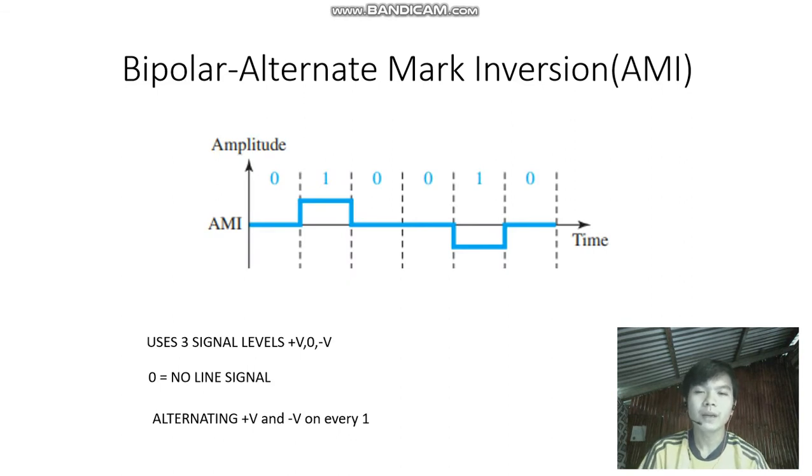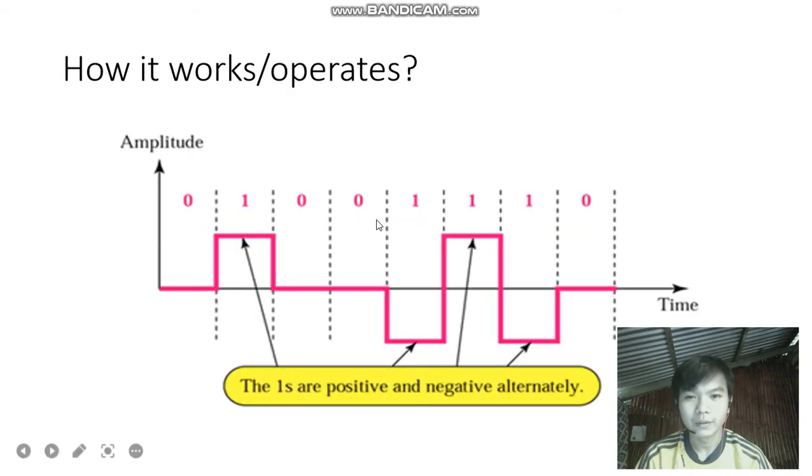So Bipolar alternating mark inversion or AMI. This is the first example of AMI. This is how it operates.